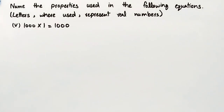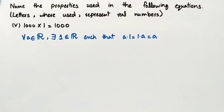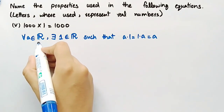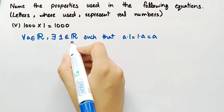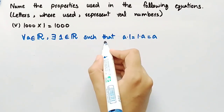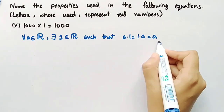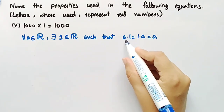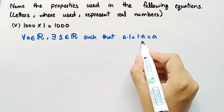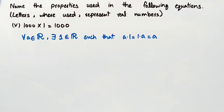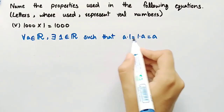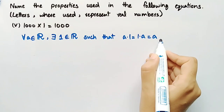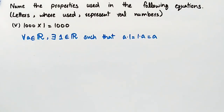The fifth equation is 1000 multiplied by 1 is equal to 1000. By the law of multiplicative identity, for all A belonging to the set of real numbers, there exists 1 in the set of real numbers such that A·1 is equal to 1·A, which equals A, where A·1 is the product of A and 1, and 1·A is the product of 1 and A. The property used is the property of multiplicative identity.